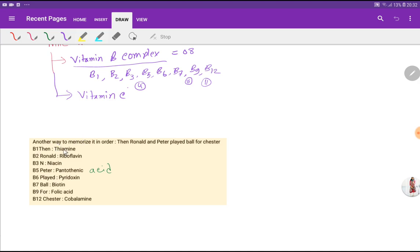Now, how to remember the order? You can memorize this: 'Then Ronald and Peter played ball for sister.'